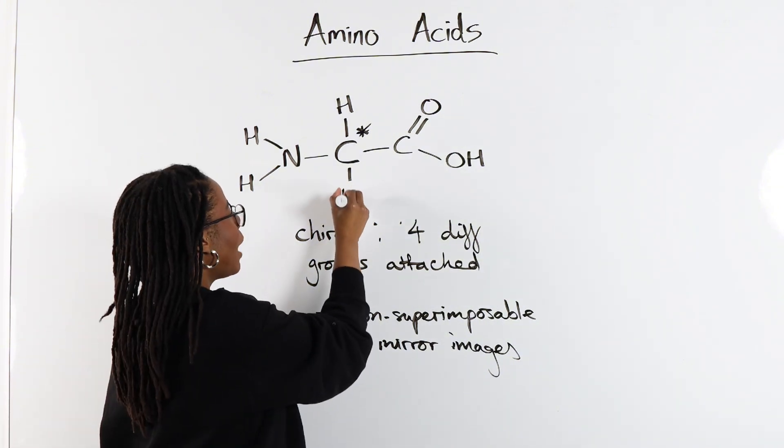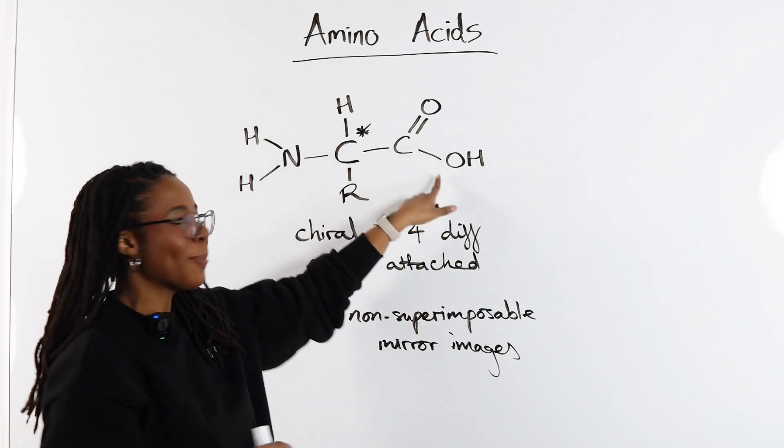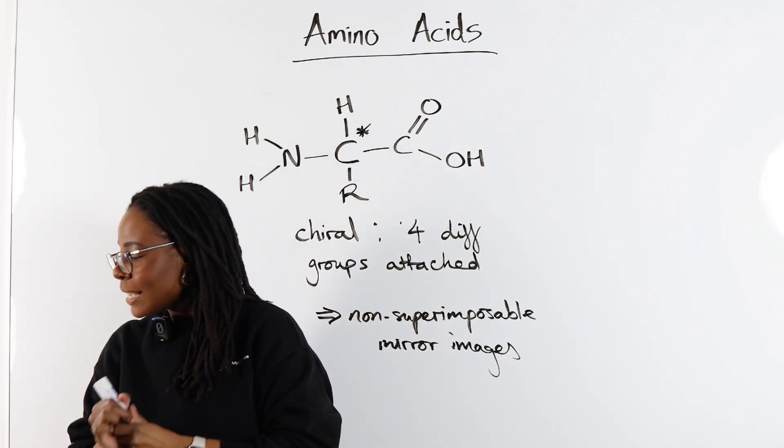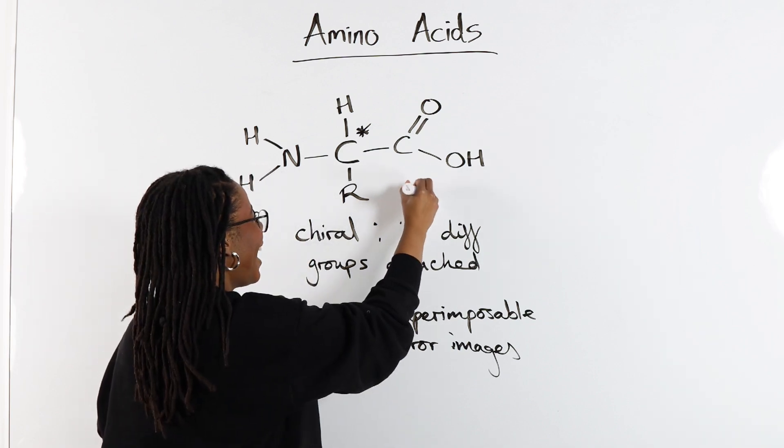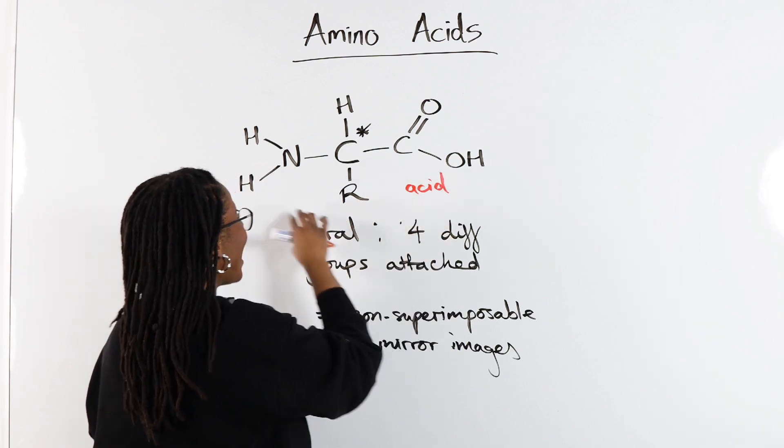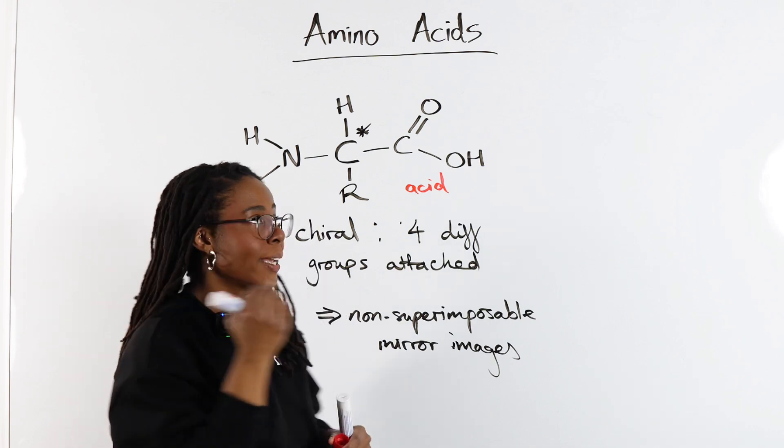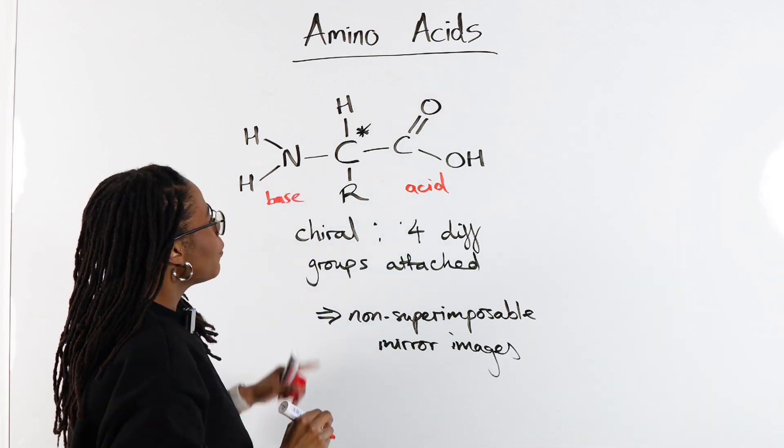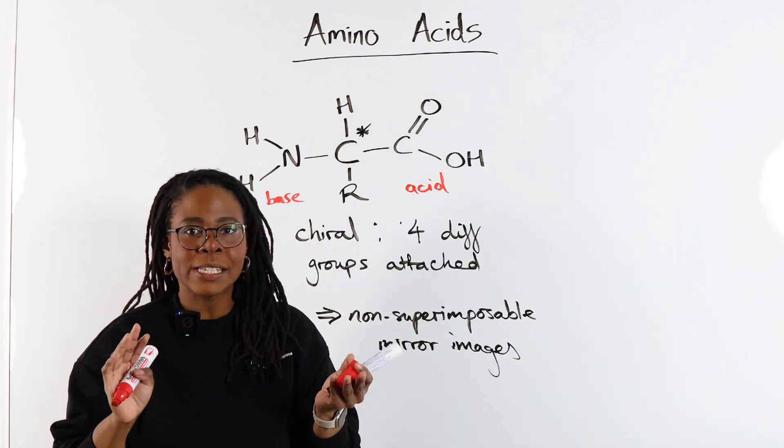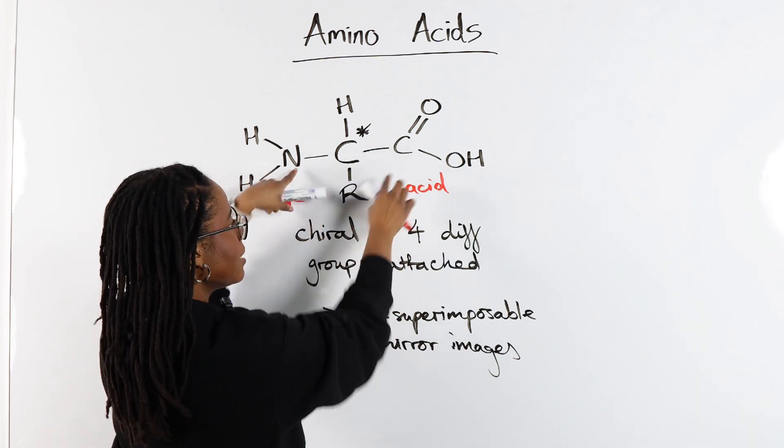Now, within our amino acid, we have an amine group and an acid group. So our acid group is going to act as an acid and our amine group, which we know from our amines topic, is going to act as a base. And because we've got an acid and a base within the same molecule, typically these are not going to exist like this.